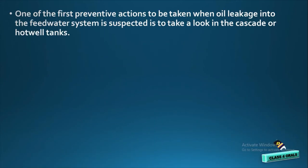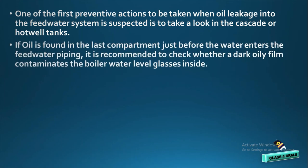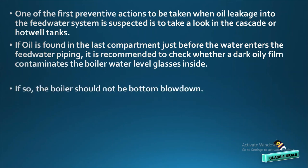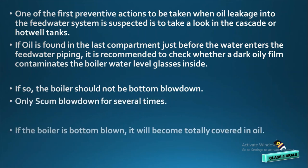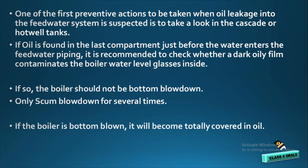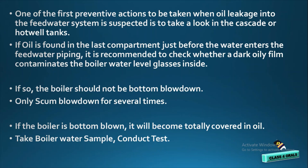One of the first preventive actions to be taken when oil is leaking into the feed water system is to look at the cascade or hot well tanks. If oil is found in the last compartment of the hot well just before the feed water system, it is recommended to check the boiler water gauge glass to see whether oil is present there or not. If there is oil, then we should not do the bottom blowdown — we have to do only the scum blowdown of the boiler several times, otherwise the boiler will be completely covered in oil. Next, we have to take the boiler water sample and perform the water sample test.